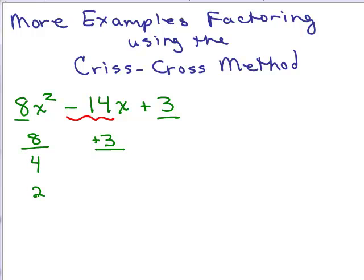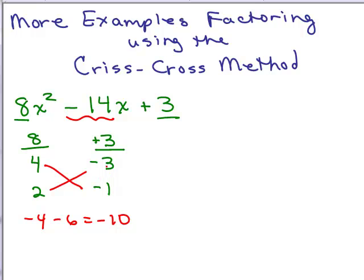Let's write 4 and 2, then we want to write factors of 3, making sure we don't put a common factor next to one of the numbers on the left. For 3 and 1, let's put 3 here and 1 there. Since it's negative 14, it's really going to be negative 3 times negative 1. These factors have to multiply out to be positive 3, and these two factors have to multiply out to be 8. So we're going to crisscross: 4 times negative 1 is negative 4, and 2 times negative 3 is minus 6, giving negative 10 — not the same as negative 14, so this is the wrong combination.